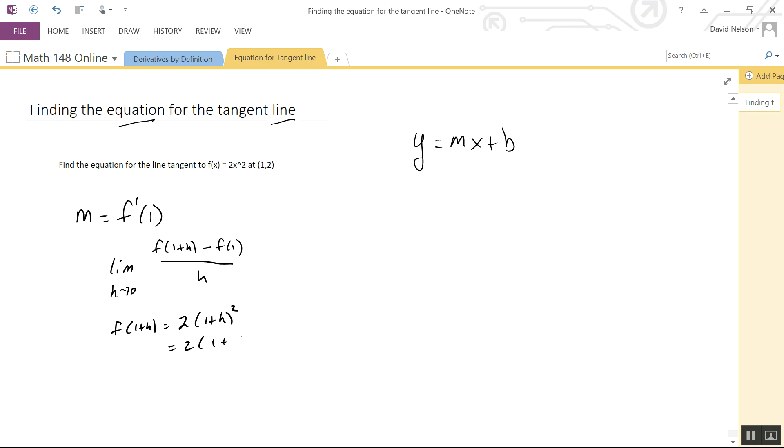If you multiply out (1+h) using FOIL or the distributive property, you get 1 + 2h + h². Then distributing the 2 through gives us 2 + 4h + 2h².